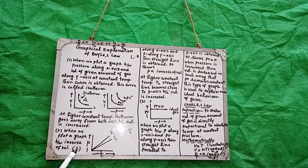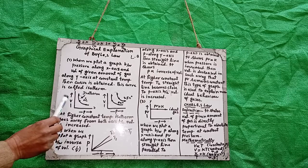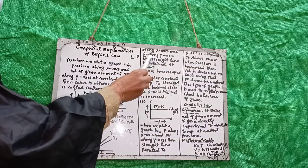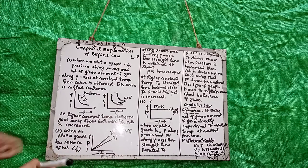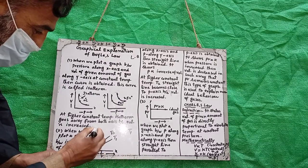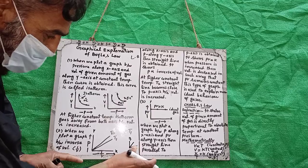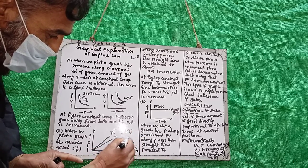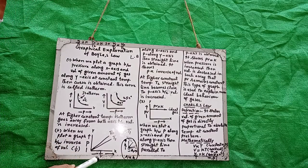Now the second type of graph: when we plot a graph between inverse of volume (1/V) along the x-axis and pressure along the y-axis, a straight line is obtained. Along the x-axis we take the independent value and along the y-axis the dependent value. When we take the inverse, the axes change.